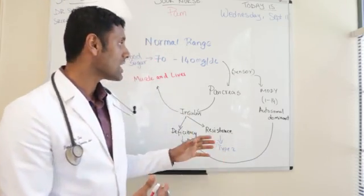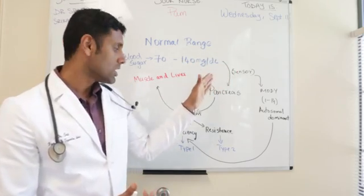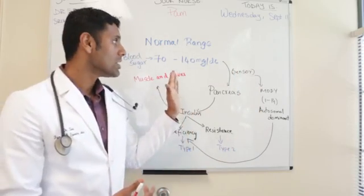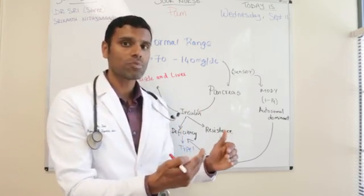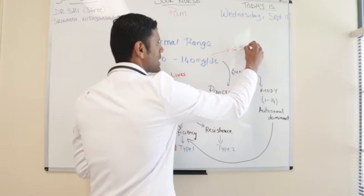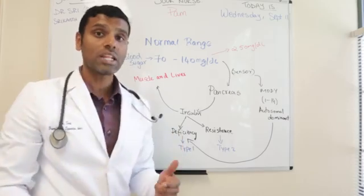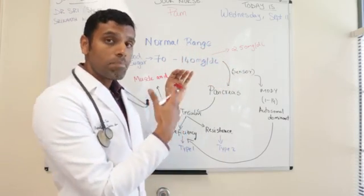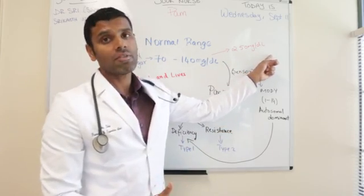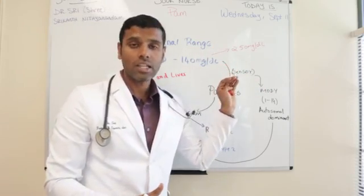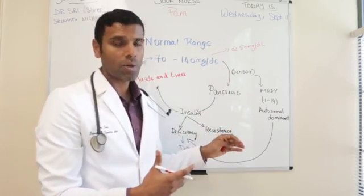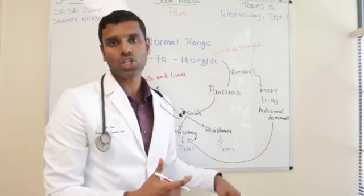Relative insulin deficiency means that for a particular blood sugar spike there is not enough insulin secreted, but if blood sugar goes higher, insulin does start to secrete. However, this creates complications — if the sensor only triggers insulin secretion at, say, 250 milligrams per deciliter, the person will have chronic hyperglycemia and thereby develop complications. So even though there are normal insulin stores in the pancreas, the relative insulin deficiency is a problem that we must treat to bring blood sugar back to normal range.